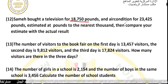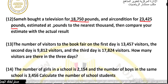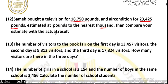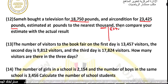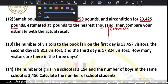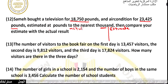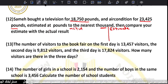Number 12: estimate by rounding to the nearest thousand, then compare your estimate with the actual result. We have two numbers — let's write the estimate and the actual side by side.